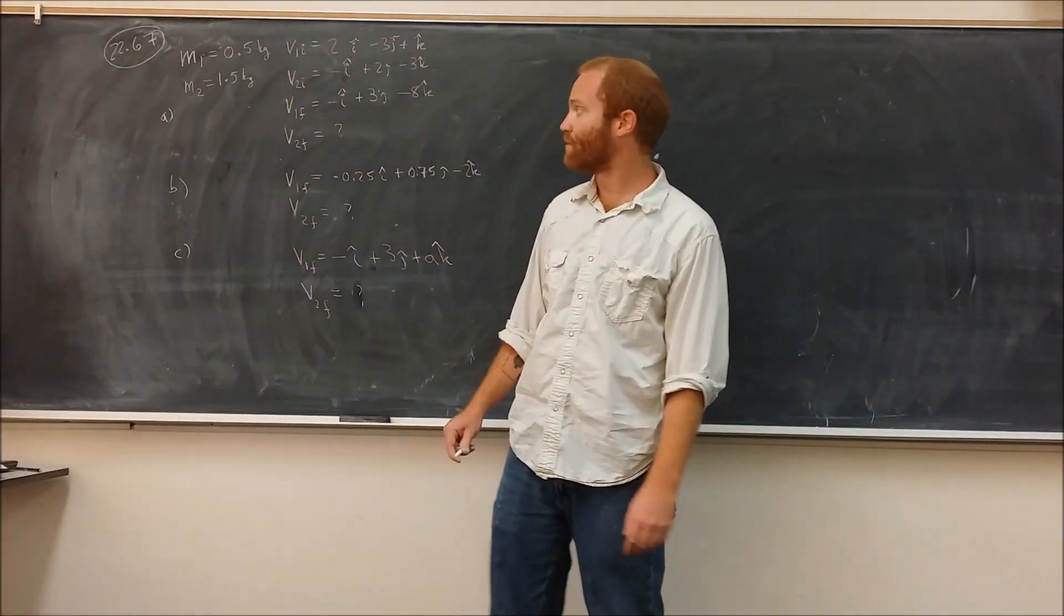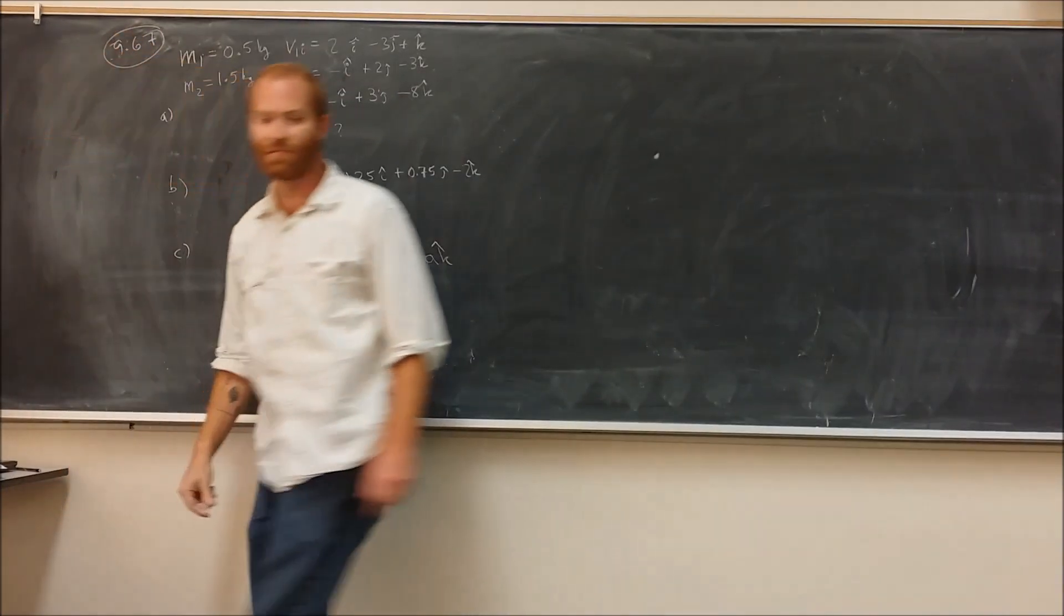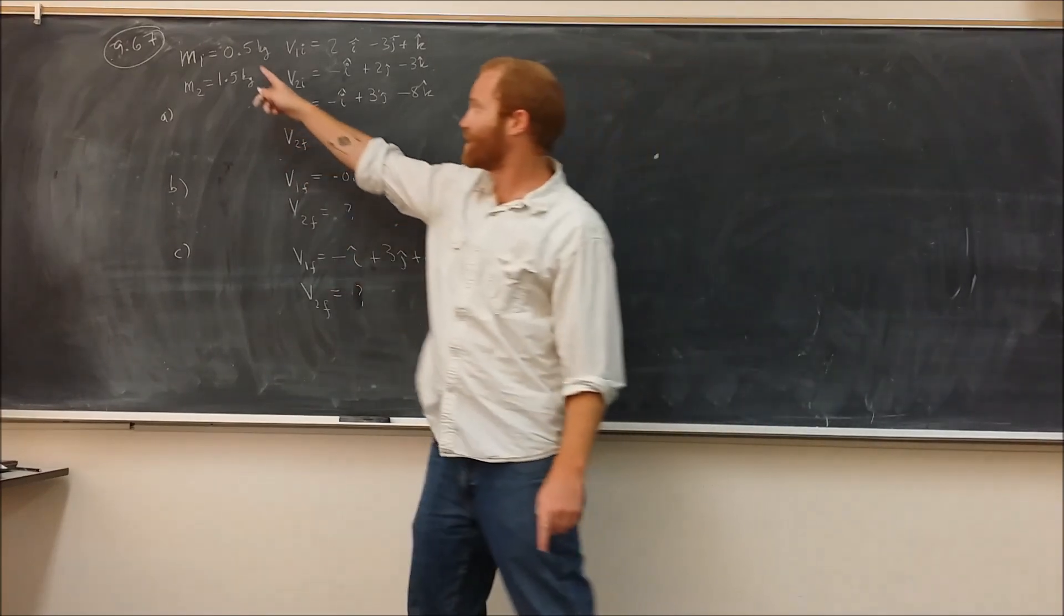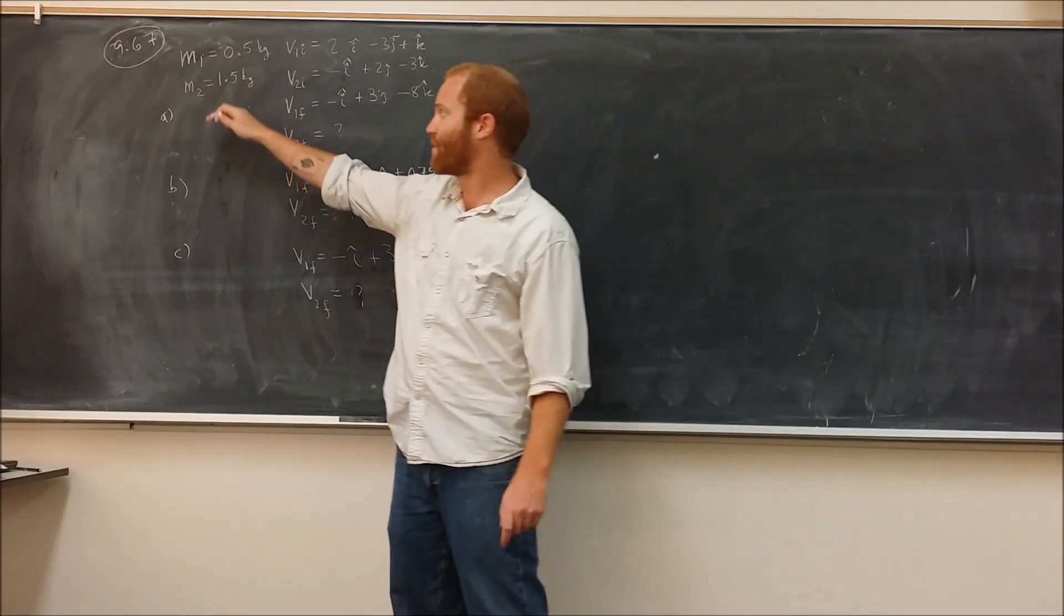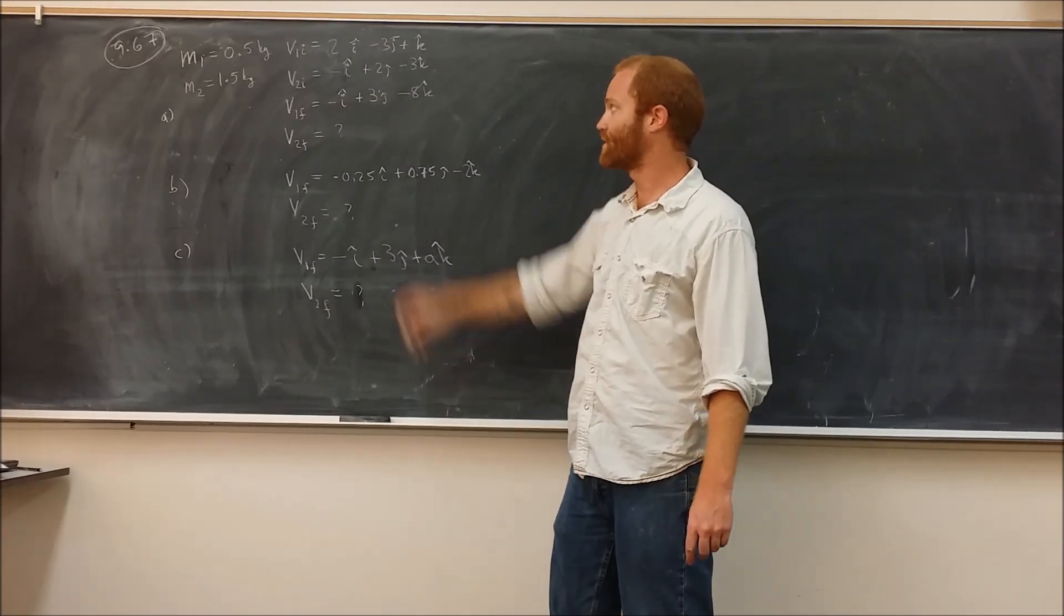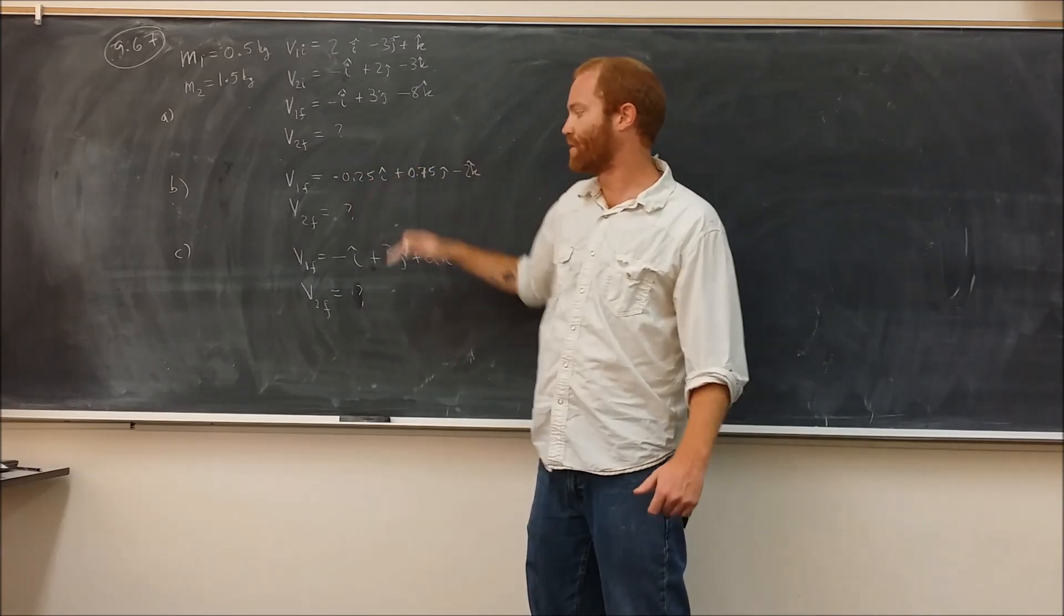We're going to do problem number 67 from chapter 9, not 22. In this problem, you have two objects, one with a mass m1 that's equal to 0.5 kilograms, one with a mass m2 that's equal to 1.5 kilograms, and you're given some initial velocities here, here, and then here's the final velocity in Cartesian form for part A, and then part B and C.